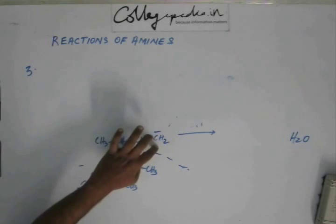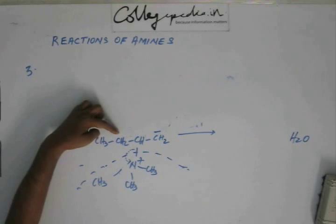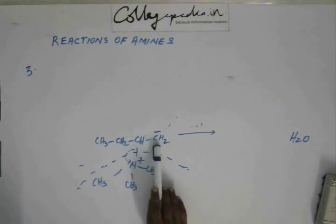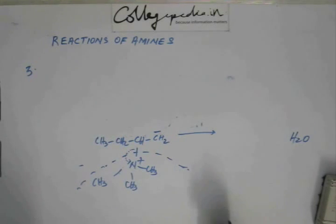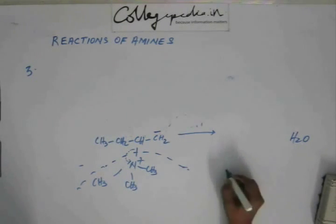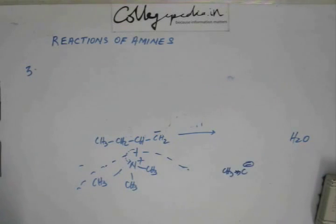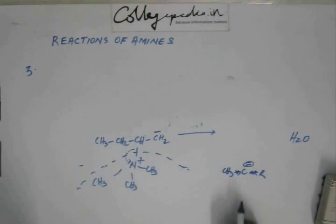Now the negative charge in this case is on this carbon. If we abstract hydrogen from the other position, the negative charge will be at that position. We need to compare which is more favorable — shall the negative charge be on a primary carbon or on a secondary carbon? Based on our understanding of the inductive effect from our very first organic chemistry lecture, alkyl groups have an electron-releasing effect and they increase the electron density. So if we have two R groups attached to a carbon bearing negative charge, both R groups will donate electrons, increasing the negative charge on that carbon and destabilizing it.